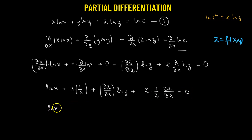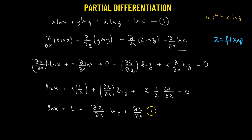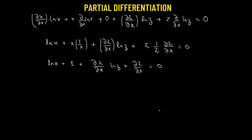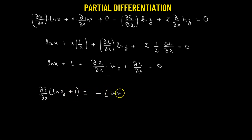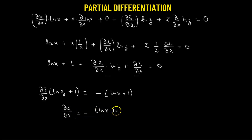Further simplification gives us log(x) + 1 + ∂z/∂x · log(z) + ∂z/∂x = 0. Taking ∂z/∂x as a common factor from the last two terms: ∂z/∂x · (log z + 1) = -(log x + 1). Therefore, ∂z/∂x = -(log x + 1)/(log z + 1). We label this as equation number two.